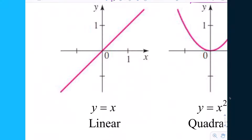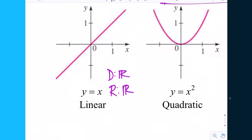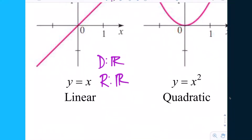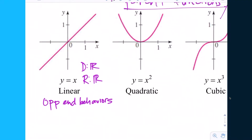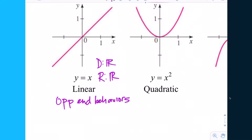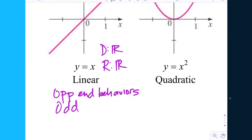It has a slope of one. What's the domain of this function? All real numbers — and that should be the answer every time for polynomials. The range is also all real numbers. Notice the end behaviors: it comes in the bottom and goes out the top, so the limit as x goes to negative infinity is negative infinity, and as x goes to positive infinity is positive infinity — opposite end behaviors. Does it have symmetry? It's origin symmetric — an odd function. The degree is 1, which is an odd number, so this is an odd-degree polynomial that is also an odd function.